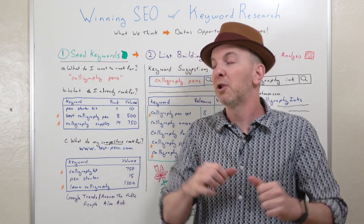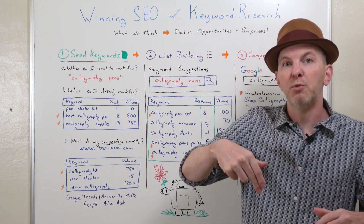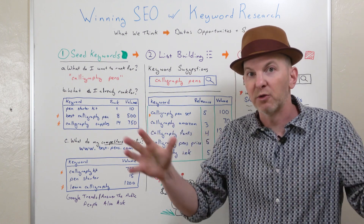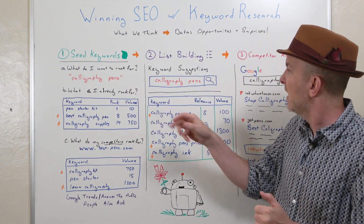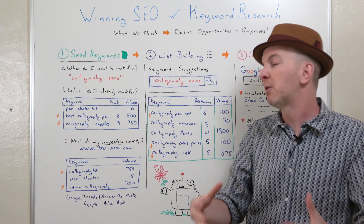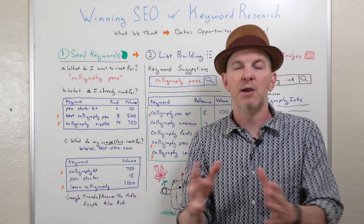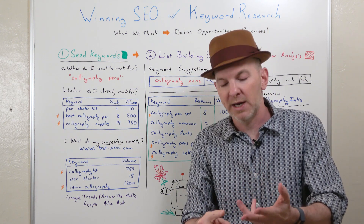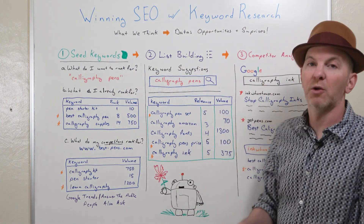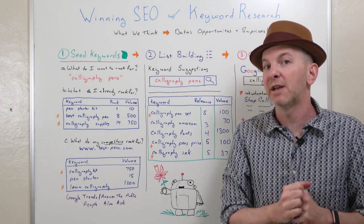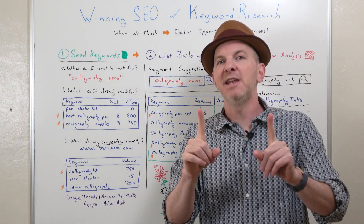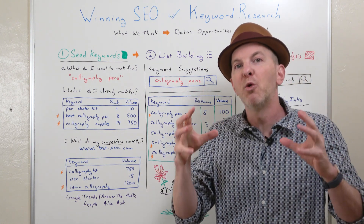Next, we're going to start building our list. Seed keywords move into list building. This is where we want to use a robust keyword research tool such as Moz, Ahrefs, or whatever you want. We're entering our seed keywords — 'calligraphy pens' — and we'll get a list of keywords sorted by relevance and volume. Now there are many metrics in keyword research, such as keyword difficulty, click-through rate, importance, and things like that. For right now, we only want to be concerned with two metrics: relevance and volume. You can concern yourself with the other metrics a little later when we're sorting and filtering. But right now we want to find more seed keywords — that's the key difference in this process. We're not just finding related keywords; we're finding more seed keywords. We're reiterating.